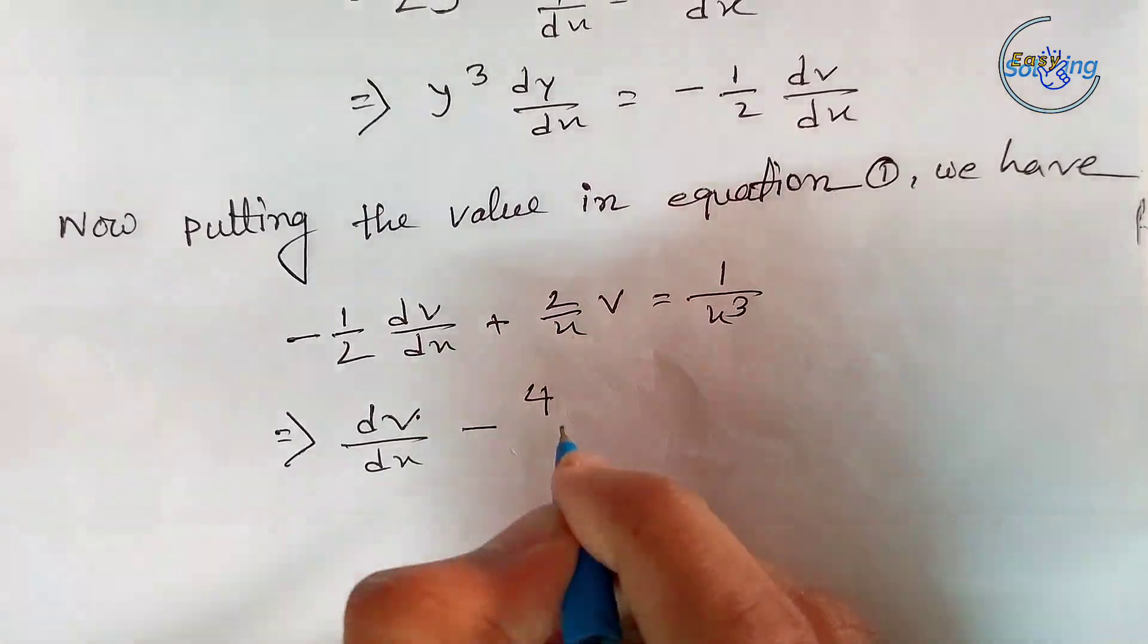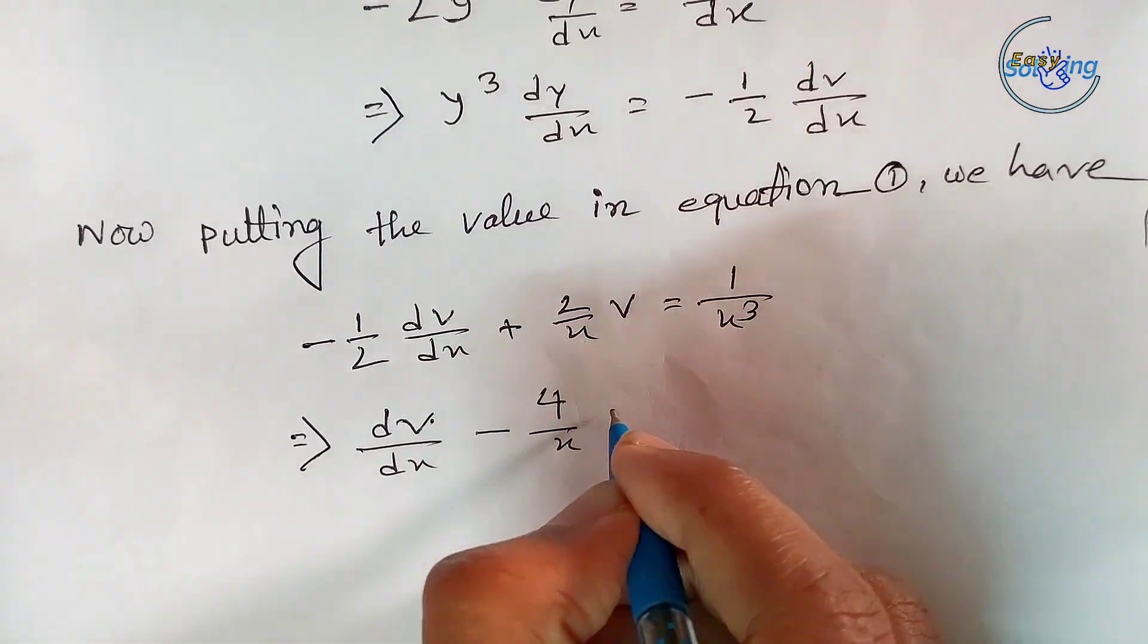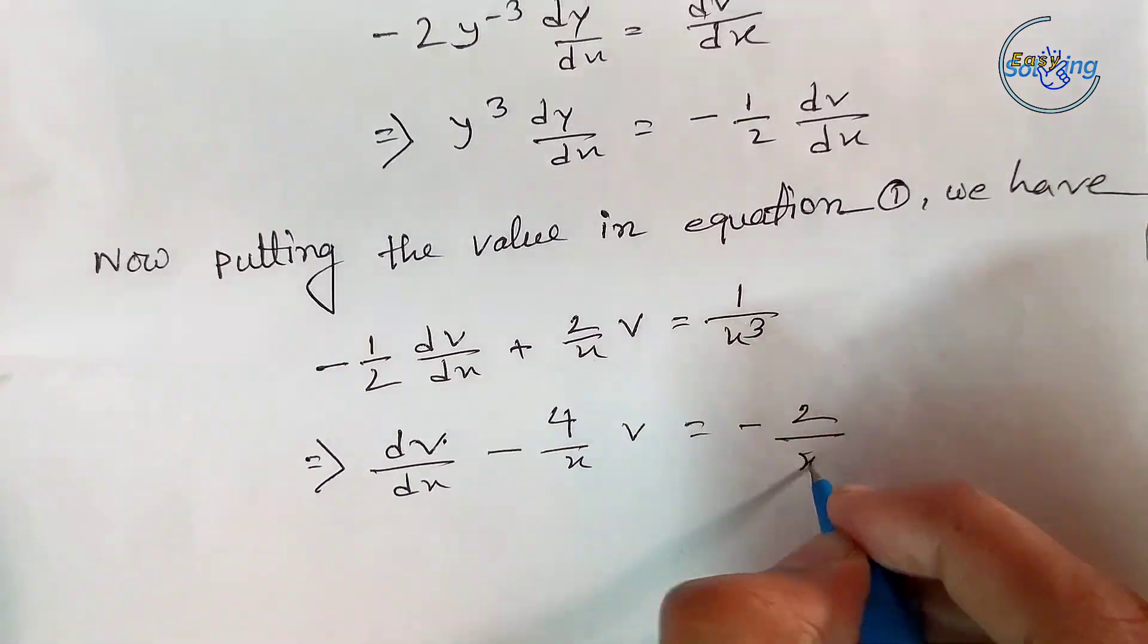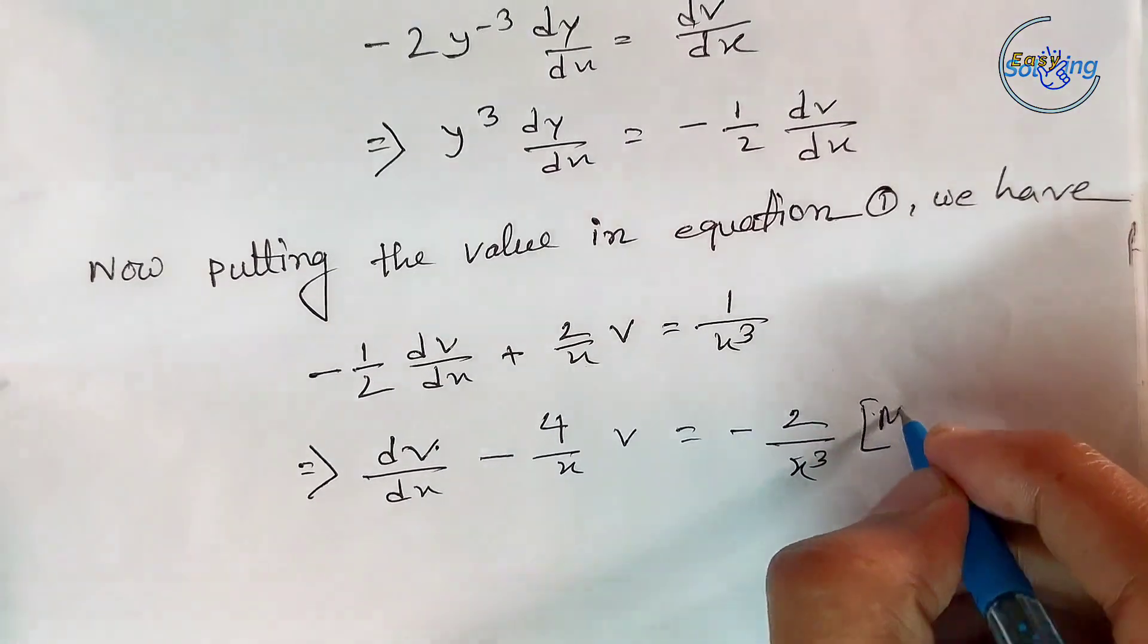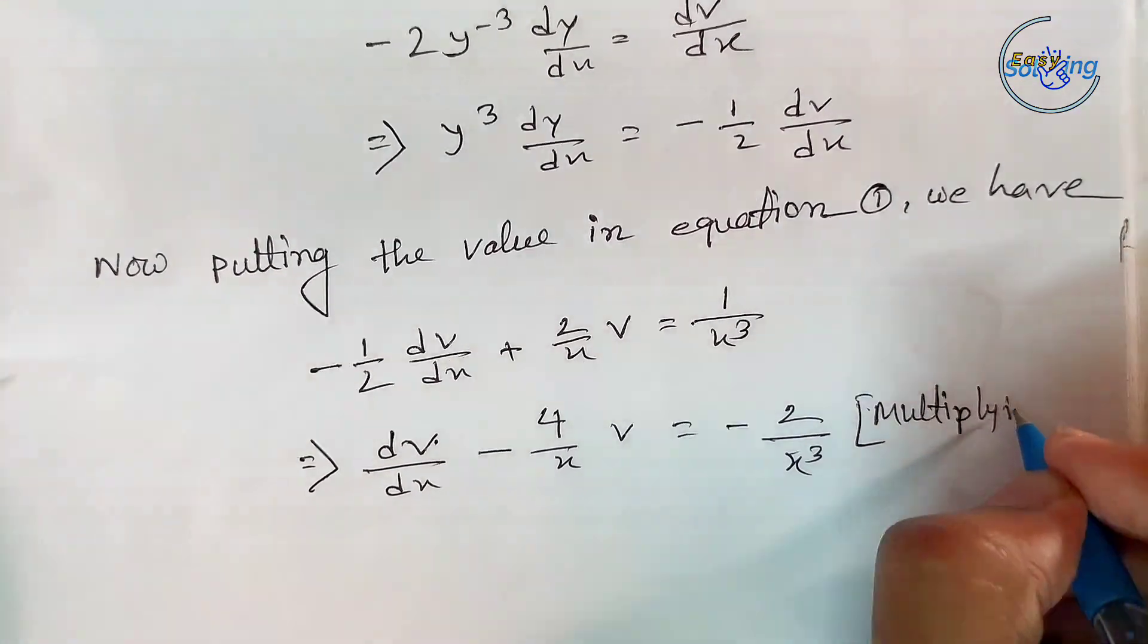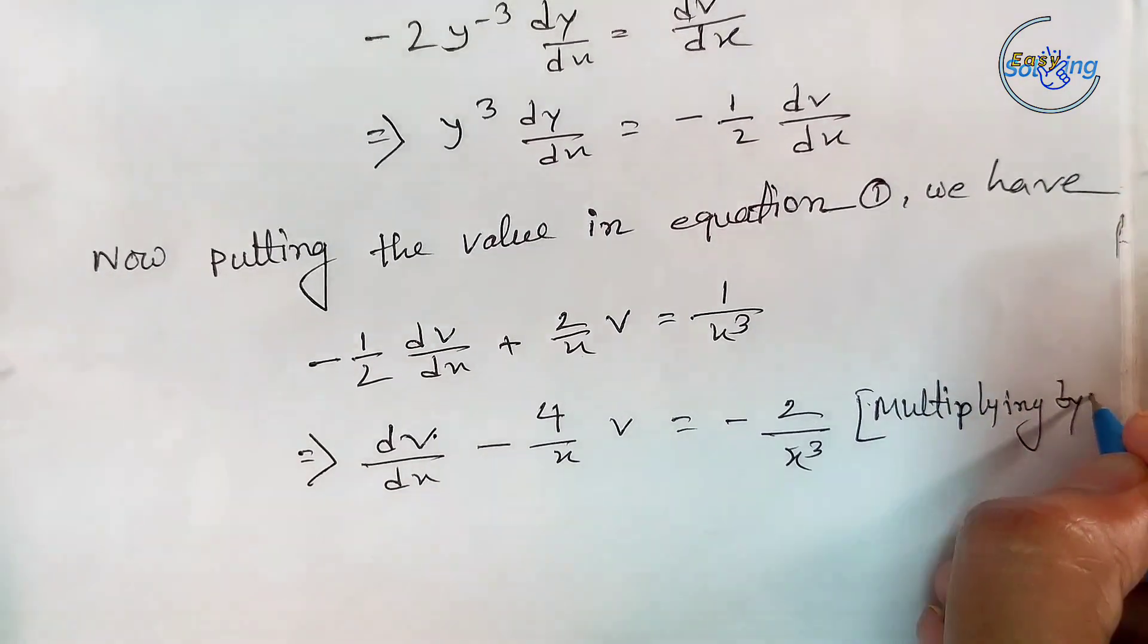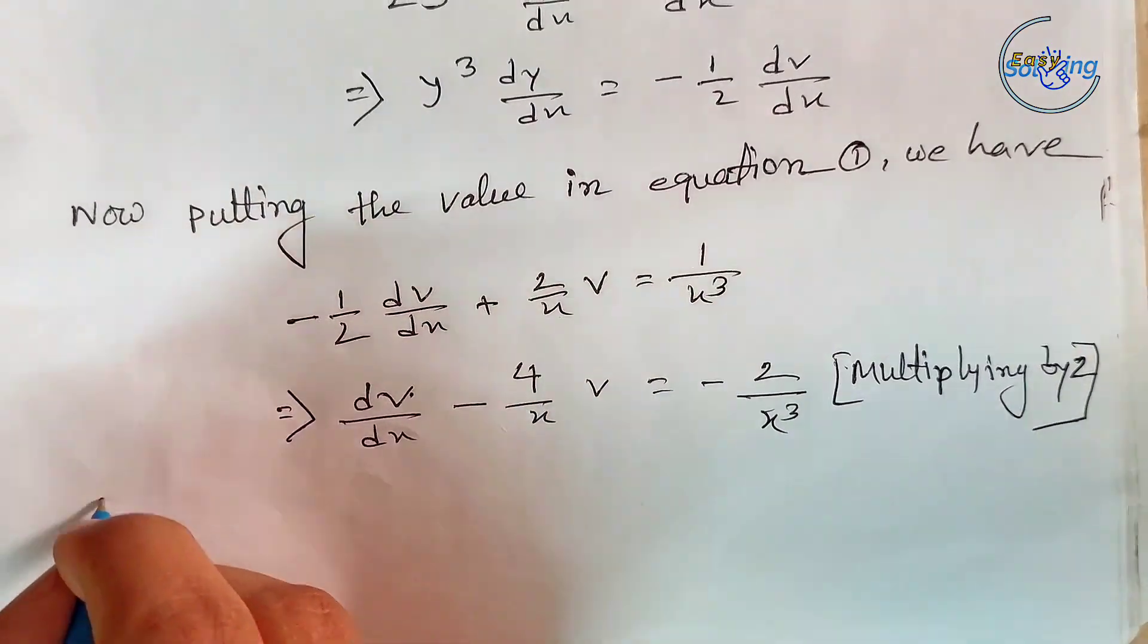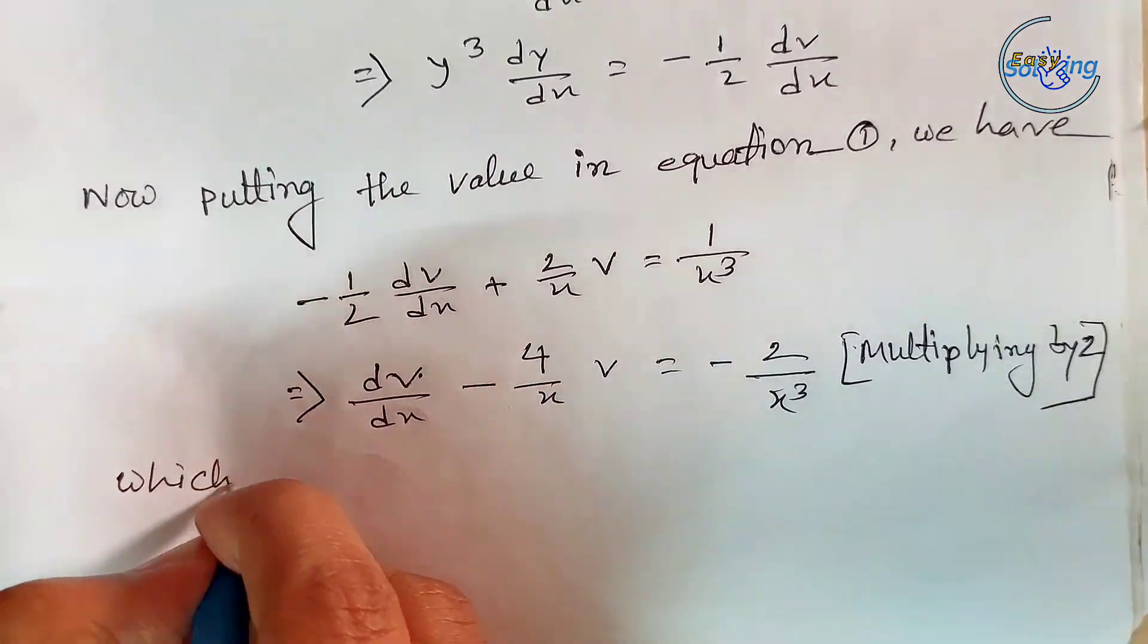Multiplying by -2, we get dV/dx - (4/x)·V = -2/x³, which is a first order and first degree linear differential equation.